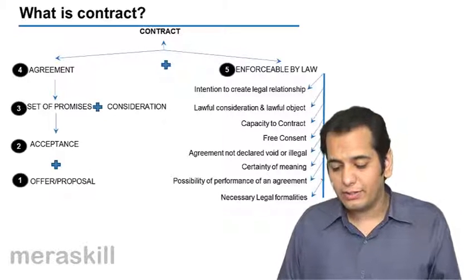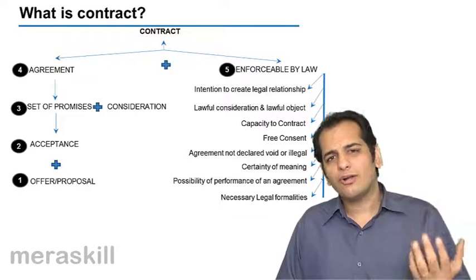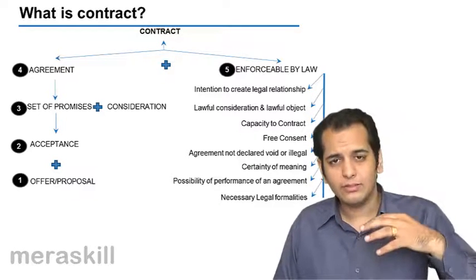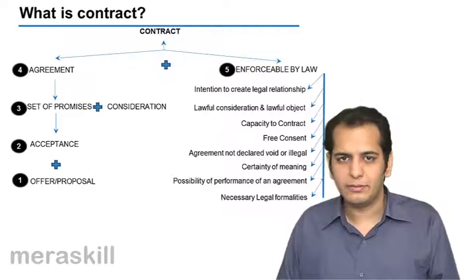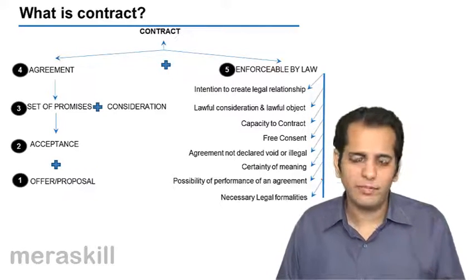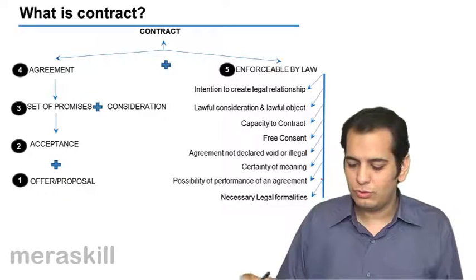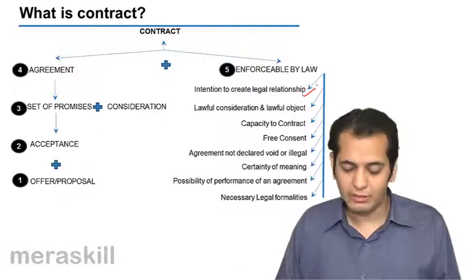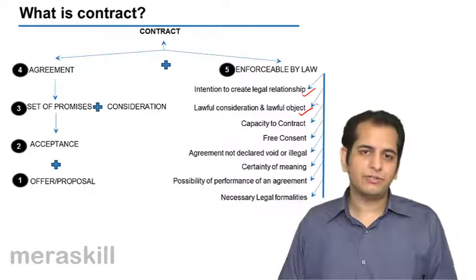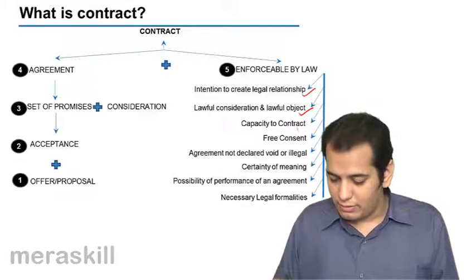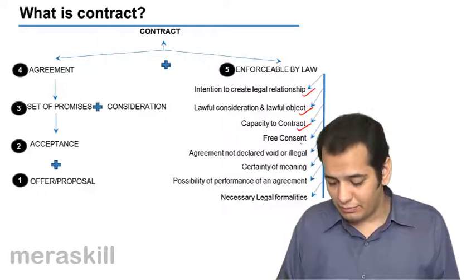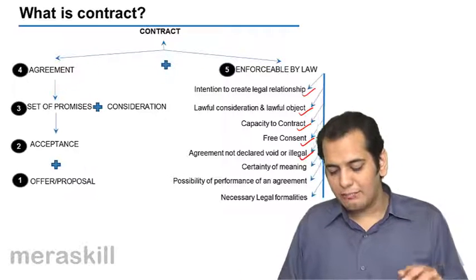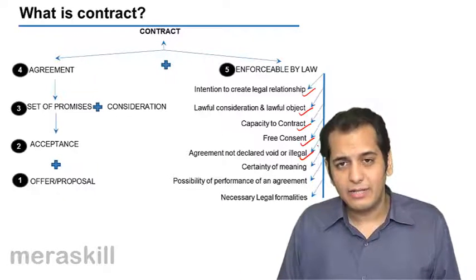We are learning how a contract gets enforceable by law — what gives a contract enforceability, or what are the essential requirements of a contract? So we said intention to create legal relationship is required. We've done that. We've also done lawful consideration, lawful object, capacity to contract, free consent, and agreement not declared as void or illegal.